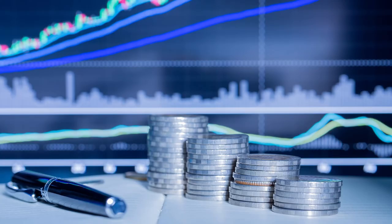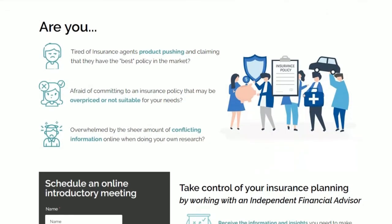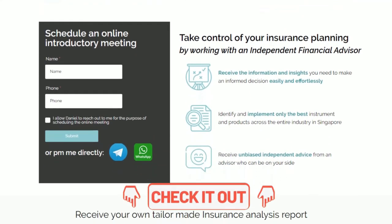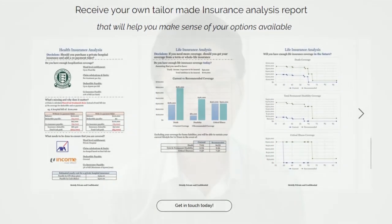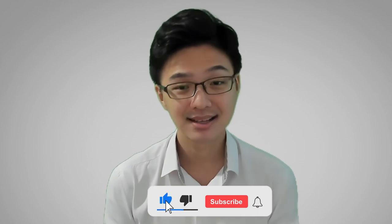At the end of the day, what matters most is that you understand the benefits and risks of both the buy term, invest the rest approach and the whole life insurance approach before committing. Consider how your insurance decisions will affect other areas of financial planning such as investments, children's education, and retirement. Take qualitative factors into account as well to determine which strategy suits you from a holistic financial planning standpoint. If you need help with insurance planning, consider engaging an independent financial advisor. Check out my website in the description below, and remember to subscribe for weekly uploads.